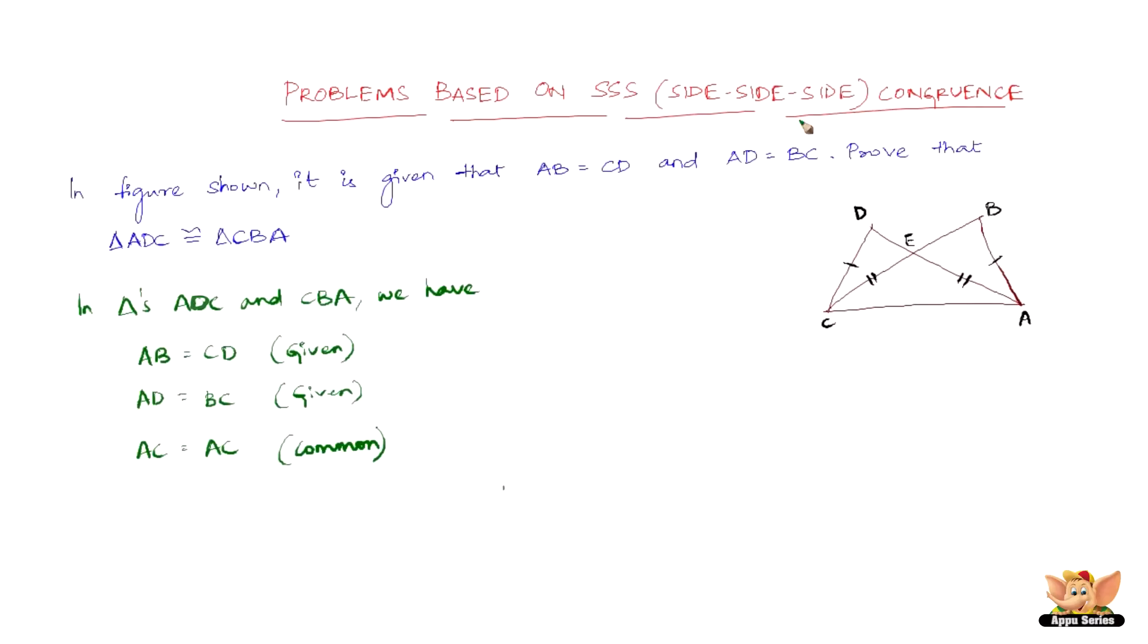the criterion here is side-side-side. So here you can see one side is equal to another side, another side is equal to another side, and then one side is the same for both the triangles. So therefore, by the side-side-side congruence criterion, triangle ADC is congruent to triangle CBA.